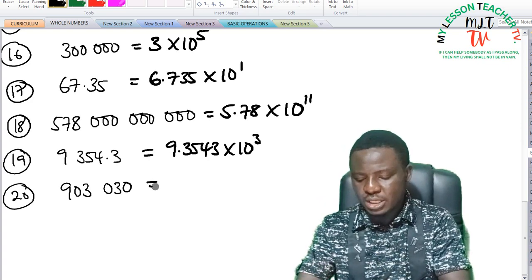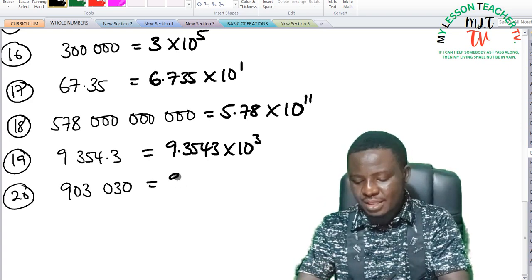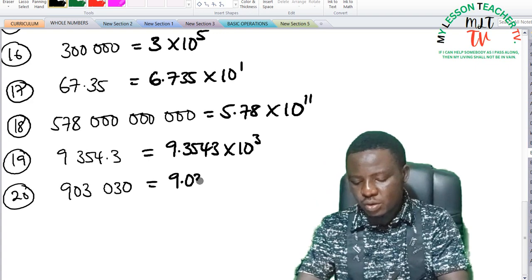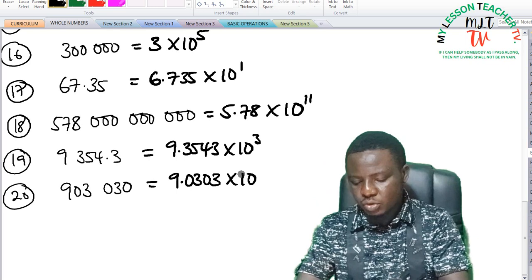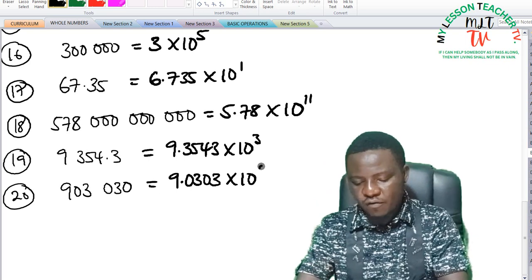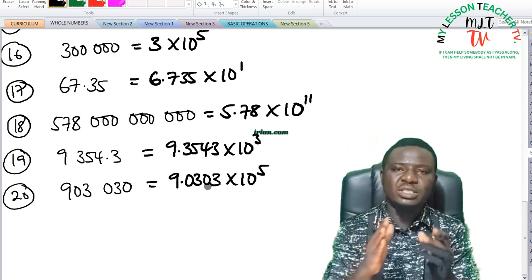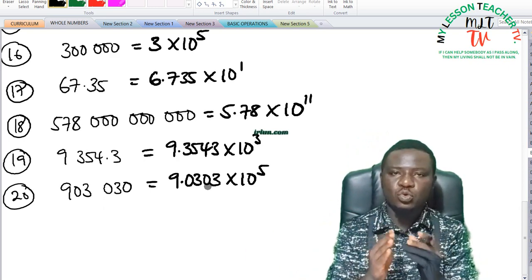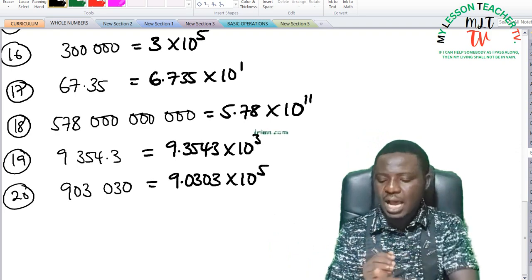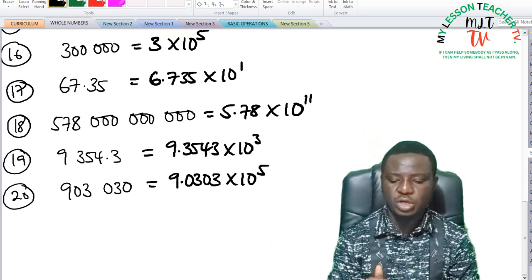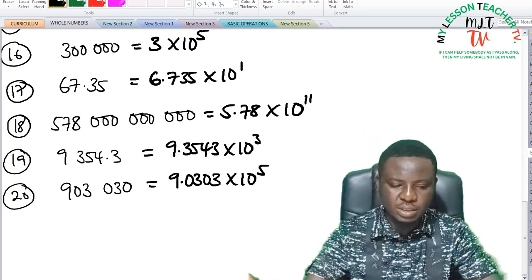And for number 20, this is 9.0303 times 10 to the power of 5. If you observe, these zeros are said to be significant because they fall between two significant figures. And the last zero is not necessary, so that is why I didn't include it.